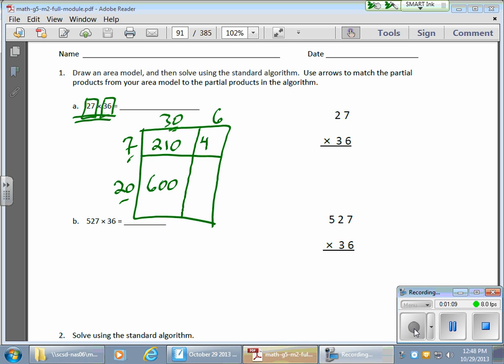7 times 6 goes in this box, which is 42. And my 20 times 6 goes in this box. My last box here, 2 times 6 gives me 12 with one more place value.